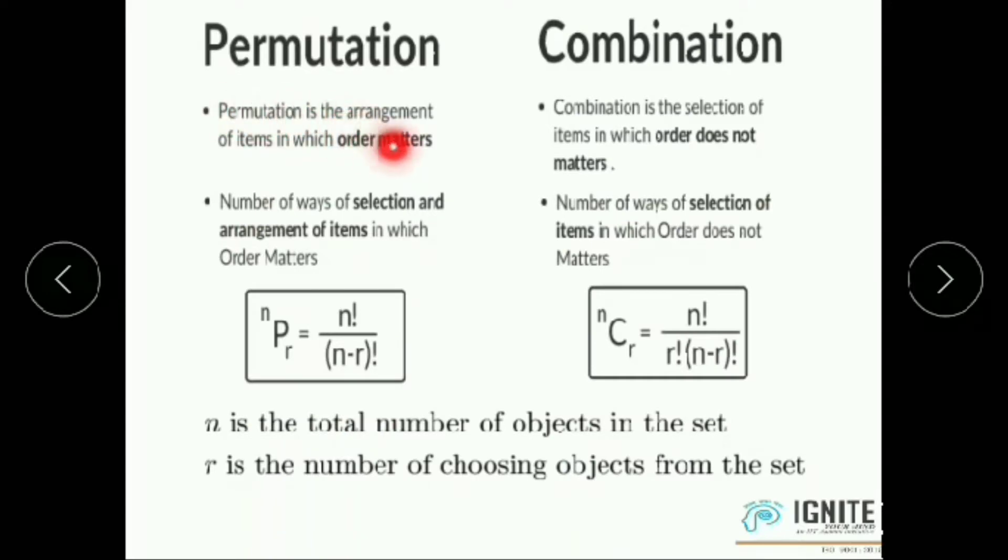Permutation is the arrangement of items in which order matters and combination is the selection of items in which order does not matter. The expression for NPR, this term is used to find the number of ways of arrangement and the term NCR is used to find the number of ways of selection. This is for arrangement and this is for selection.